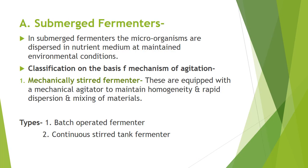Now we will see each fermenter one by one. The first type is the submerged fermenter. In submerged fermenters, the microorganisms are dispersed in nutrient medium and favorable environmental conditions are maintained. On the basis of the mechanism of agitation, fermenters are further classified. The first class is mechanically stirred fermenters, which are equipped with a mechanical agitator so as to maintain homogeneity and rapid dispersion and mixing of materials.